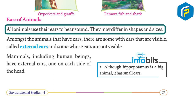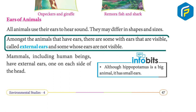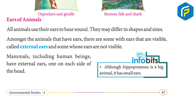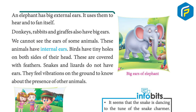All animals use their ears to hear sound, but ears may differ in shape and size. Among animals that have ears, some have visible external ears and some do not. Mammals, including human beings, have external ears — one on each side of the head. Although the hippopotamus is a big animal, it has small ears. An elephant has big external ears, which it uses both to hear and to fan itself.